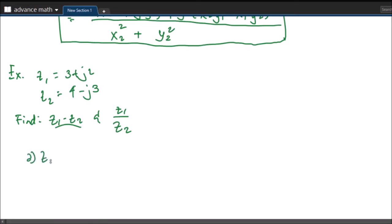So we first go to Z1 minus Z2. So this is 3 plus J2 minus 4 minus J3. So we have 3 minus 4. This is just minus. Plus J, so we just subtract the imaginary parts minus negative 3.